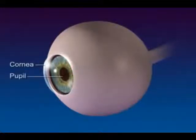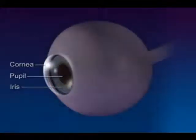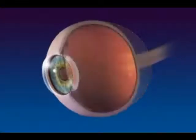The pupil is the circular opening in the front of the choroid, and the iris is the colored smooth muscle surrounding the pupil, which adjusts the size of the opening according to the brightness of light.